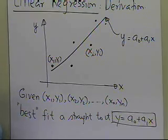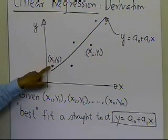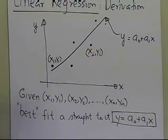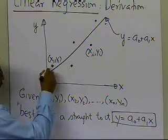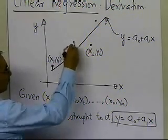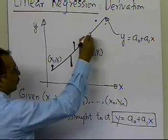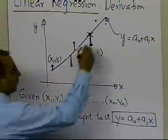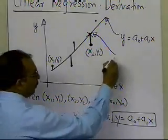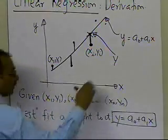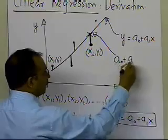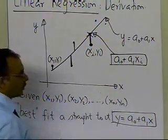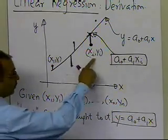Eventually what you want to do is minimize the amount of difference between the observed values — the ones given to you — and what the straight line would predict. You have differences at several points; at all the data points there is a difference between what you are observing and what you are predicting. The cross is the predicted value and the dot is the observed value. The predicted value at a particular point is simply a0 + a1*xi, and this is the observed value.